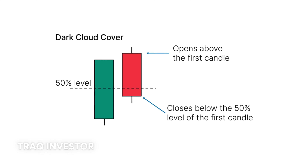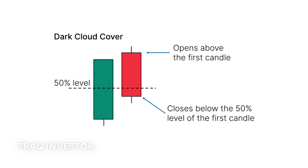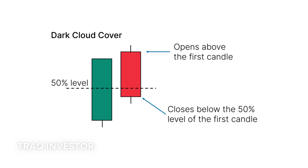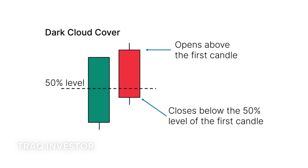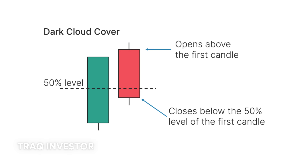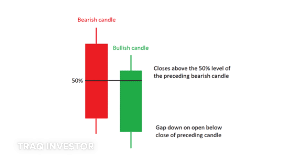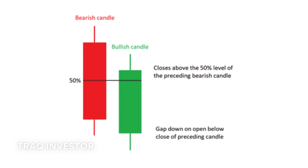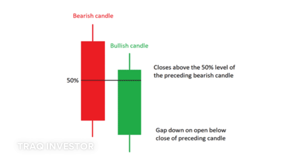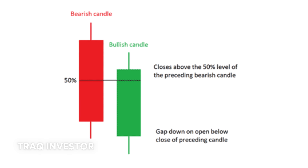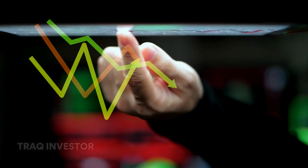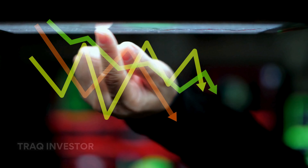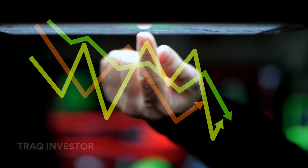The dark cloud cover pattern signals a bearish reversal, casting a shadow over the optimism of the previous day. It consists of two candlesticks — a red one opening above the previous green body and closing below its midpoint. This signals the bears taking control, pushing the price sharply lower. Short wicks suggest a decisively strong downtrend.